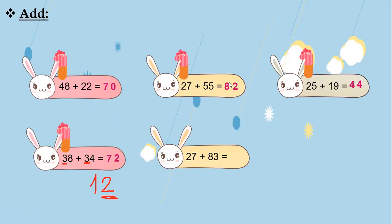27 plus 83: I will add ones with ones and tens with tens. 3 is ones and 8 is tens; 7 is ones and 2 is tens. We will add 7 plus 3 — 7 in my mind and 3 on my fingers. After 7: 8, 9, 10. So the result equals 10. I will write 0 and carry up 1. Now 1 plus 2 plus 8: do you remember that 2 and 8 make 10? So 2 plus 8 equals 10, then 10 plus 1 equals 11. So 27 plus 83 equals 110.